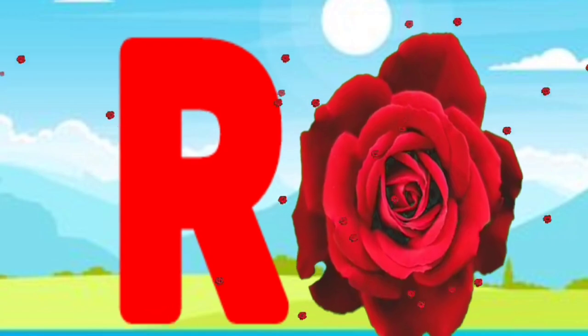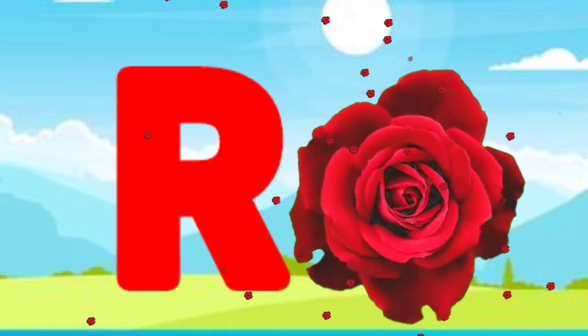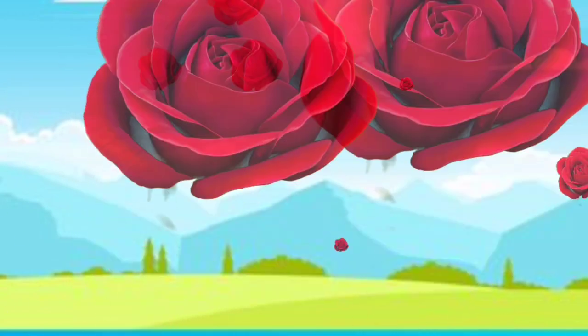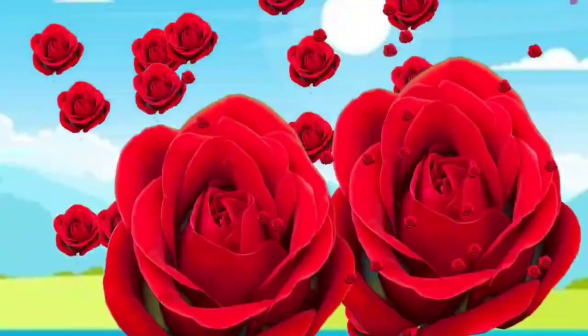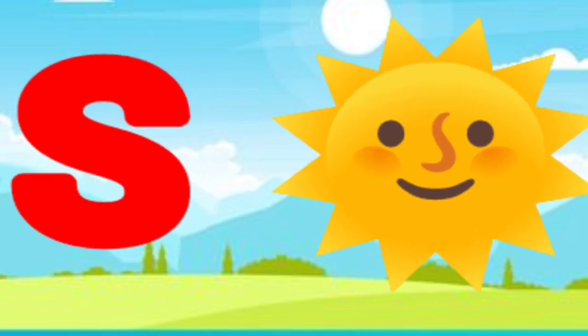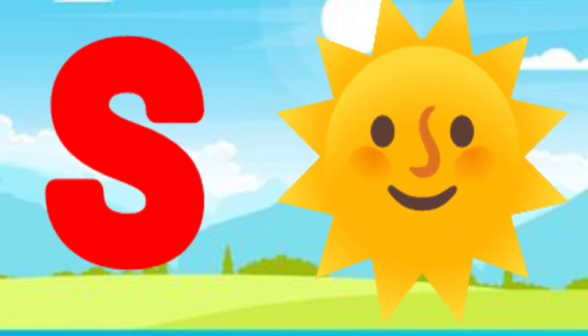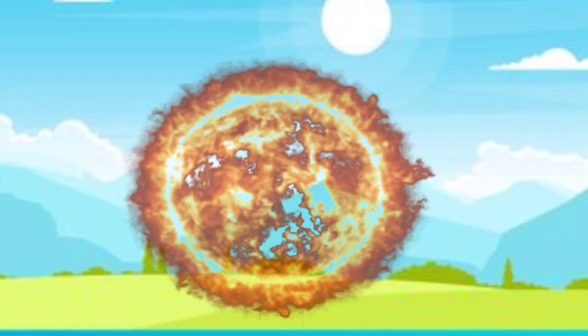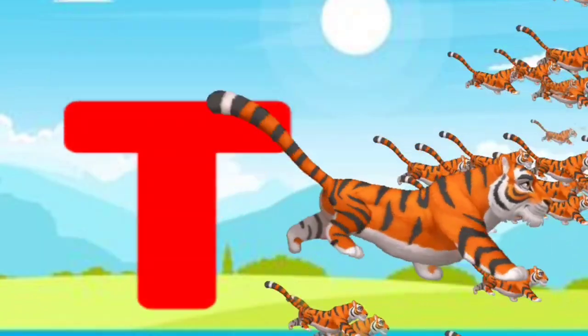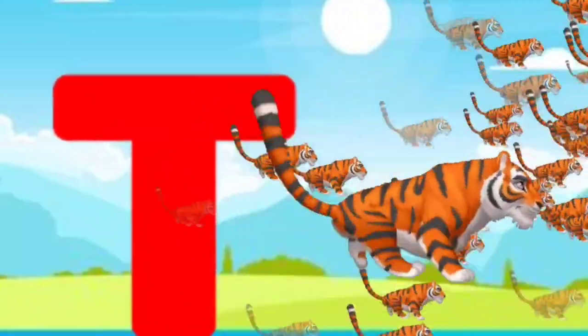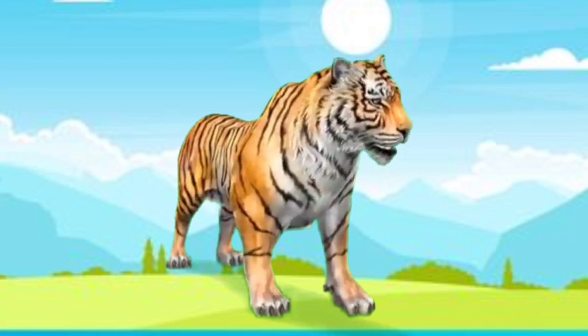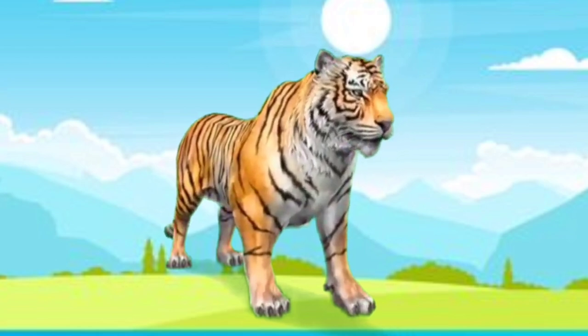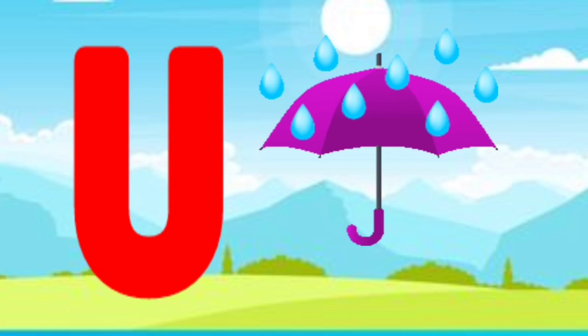R for rose. S for sun. T for tiger. U for umbrella.